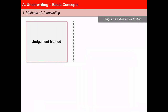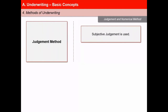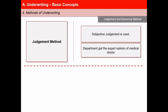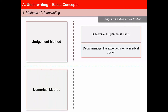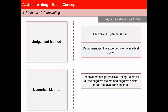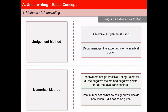Underwriters may use two types of methods. First is the judgment method, where subjective judgment is used especially for complex cases. The department may get the expert opinion of a medical doctor, also known as a medical referee — for example, deciding whether to insure someone with acute diabetes. Second is the numerical method, where the underwriter assigns positive rating points for all negative or adverse factors and vice versa. The total points determine the extra mortality rating or EMR. Higher the EMR, more substandard the life is; if the EMR is very high, insurance may even be declined.